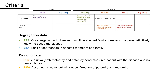Next, Segregation Data: PP1 can be assigned when the variant co-segregates with the disease in multiple affected family members in a gene definitively known to cause the disease. On the other hand, BS4 is for variants with lack of segregation in affected members of a family.